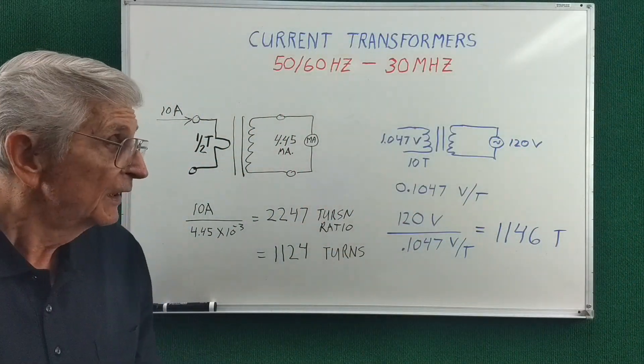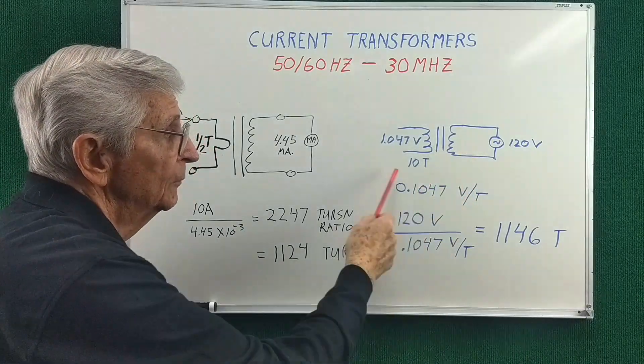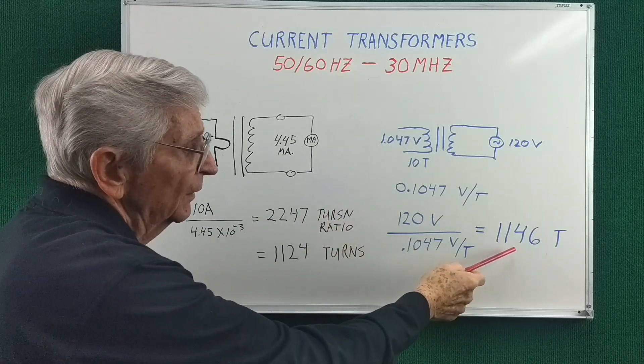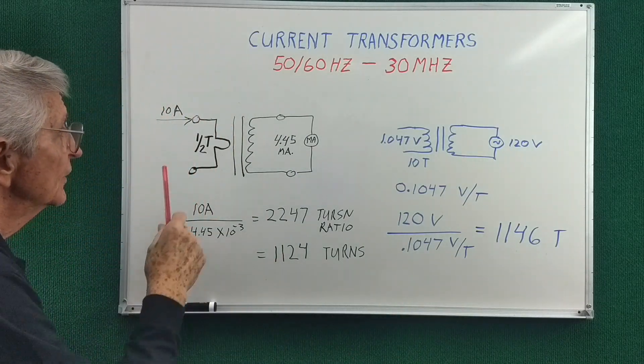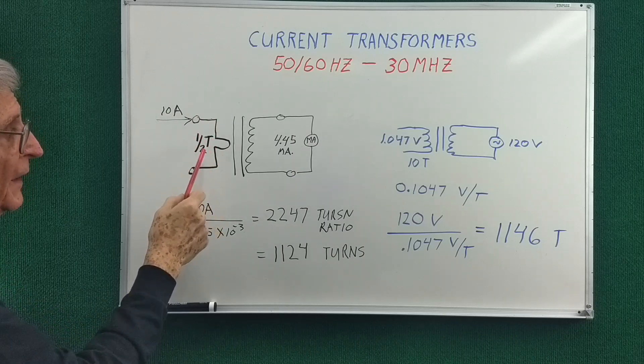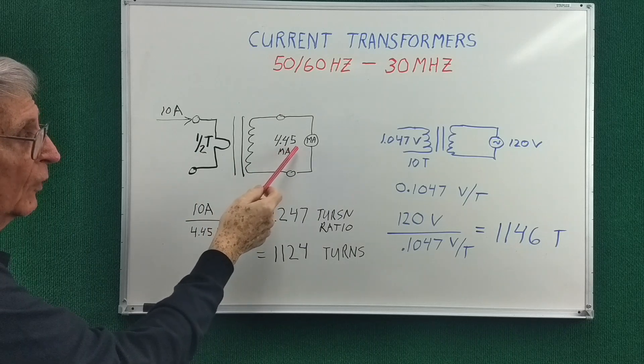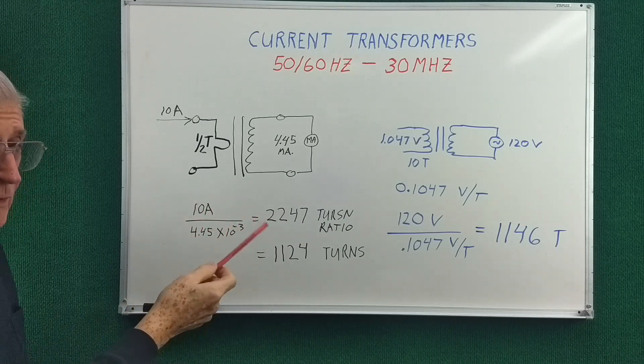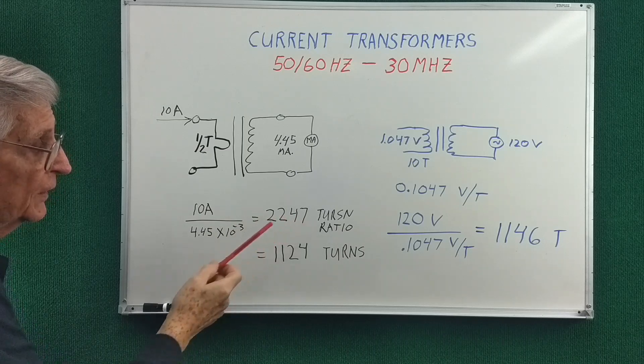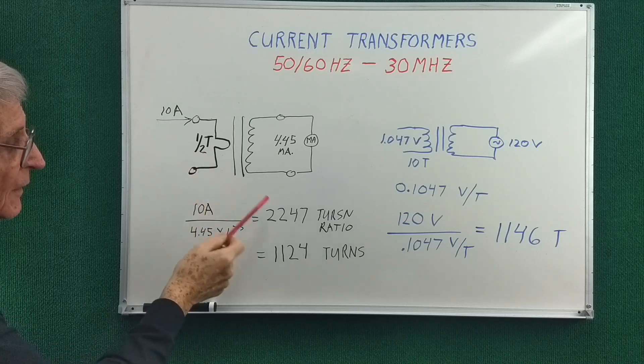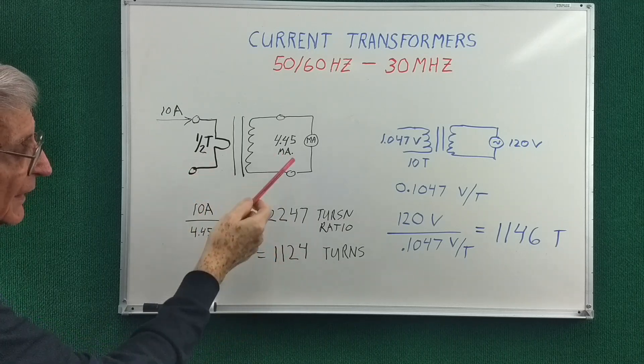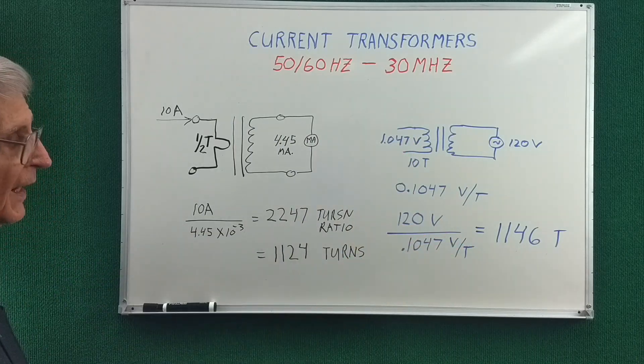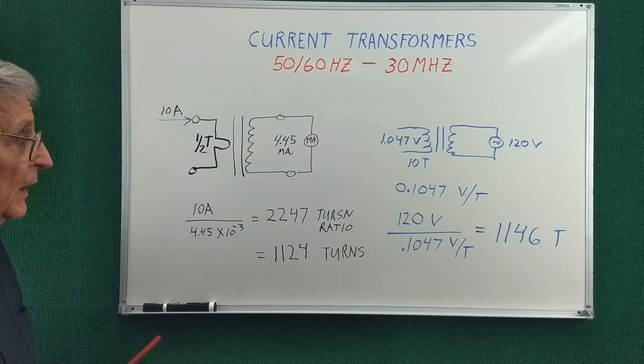Okay, previously we estimated our primary turns by measuring the voltage across 10 turns, and then calculating the ratio of the voltages, and we got 1146 turns. Now we just passed 10 amps through a one half turn primary and got 4.45 milliamps on the secondary. And that's a current ratio, which would also be a turns ratio of 2247. Now because that's a half a turn, if we divide that by two, we'd come up with a secondary turns of 1124, and that pretty much matches what we measured using that method. So this half turn thing is valid.